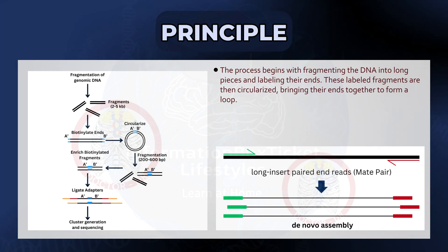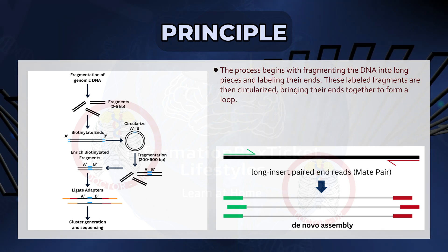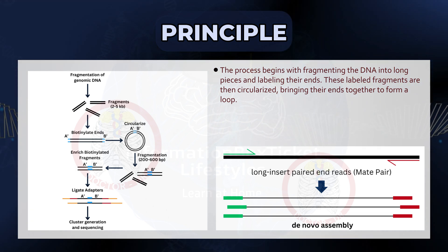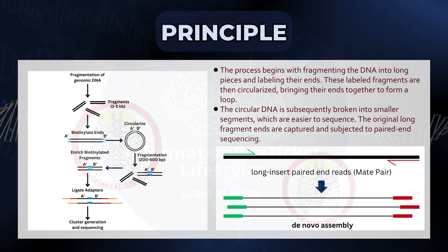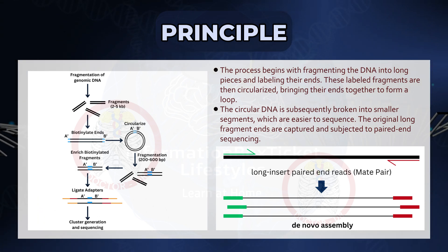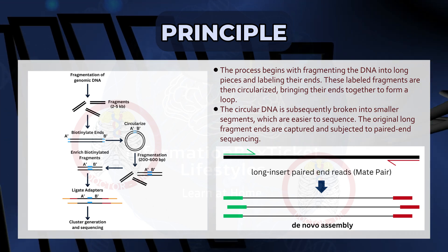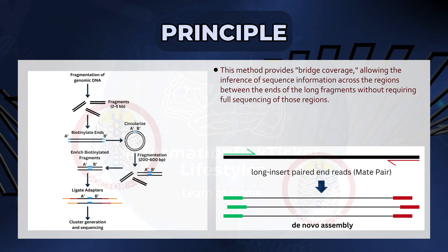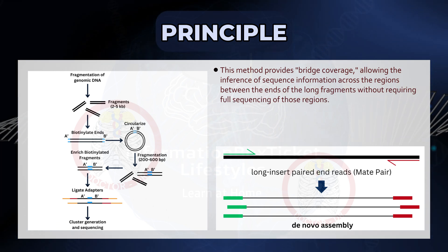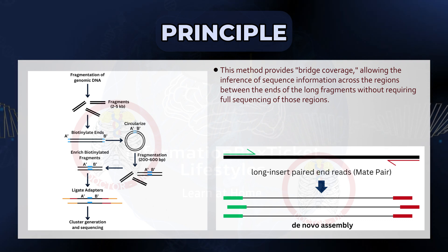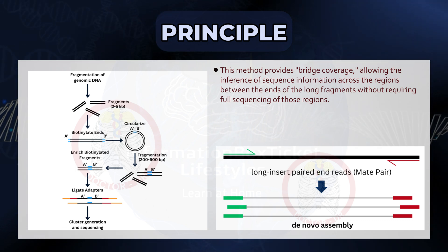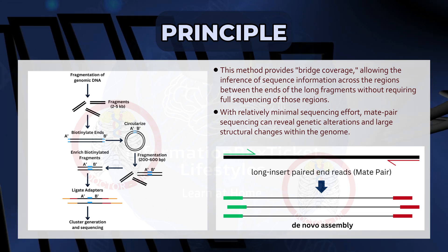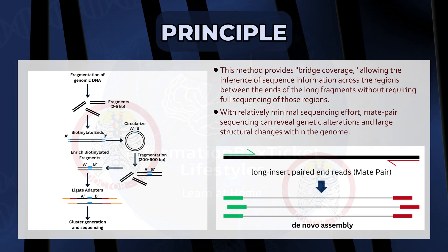The process begins with fragmenting the DNA into long pieces and labeling their ends. These labeled fragments are then circularized, bringing their ends together to form a loop. The circular DNA is subsequently broken into smaller segments which are easier to sequence. The original long fragment ends are captured and subjected to paired-end sequencing. This method provides bridge coverage, allowing the inference of sequence information across the regions between the ends of the long fragments without requiring full sequencing of those regions. With relatively minimal sequencing effort, mate pair sequencing can reveal genetic alterations and large structural changes within the genome.